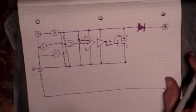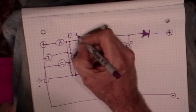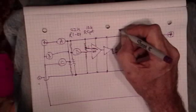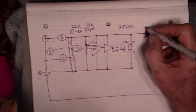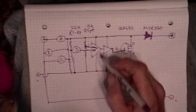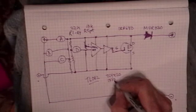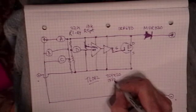So now some component values: R1 through R4, 22K, the R5 pot, 10K, MOSFET IRF640 or similar, diodes MUR1560 or similar, TL082 for that, TC4420 or IXDD614, something like that.